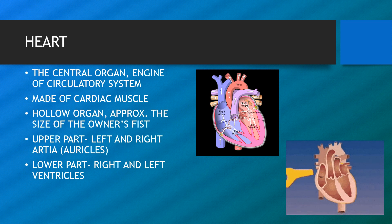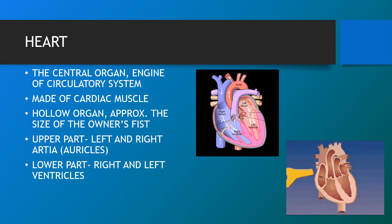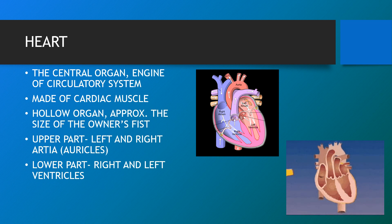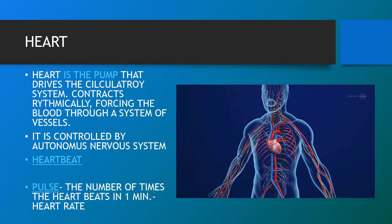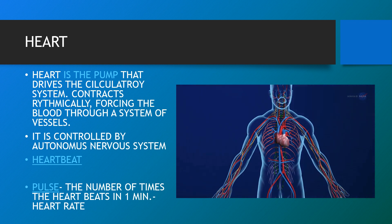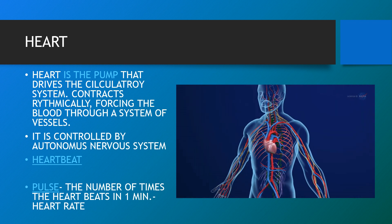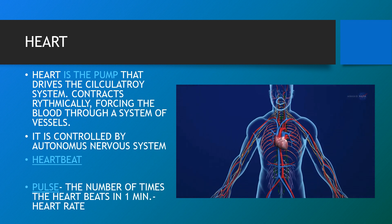The heart is the central organ and engine of the circulatory system. It is made up of cardiac muscle, is the size of your clenched fist, and lies in front and in the middle of your chest, behind and slightly to the left of your breastbone. It is a muscle that pumps blood to all parts of your body to provide it with the oxygen and nutrients it needs to function. The heart is the pump that drives the circulatory system, contracting rhythmically and forcing blood through a system of vessels.